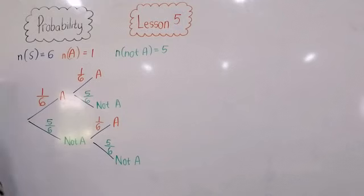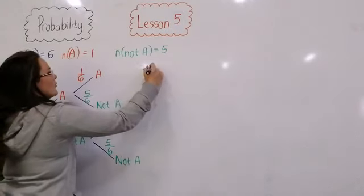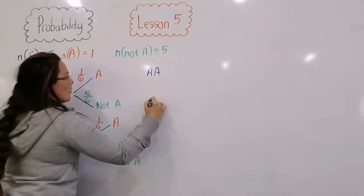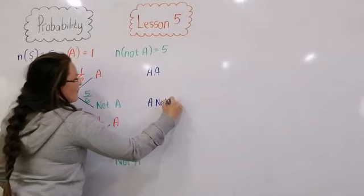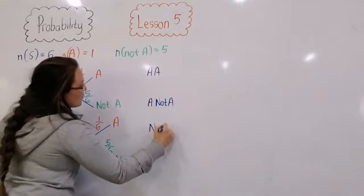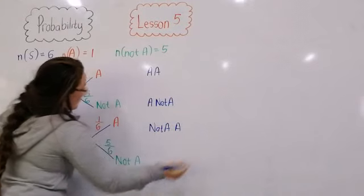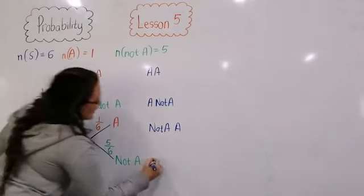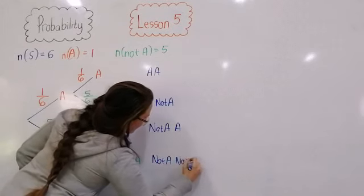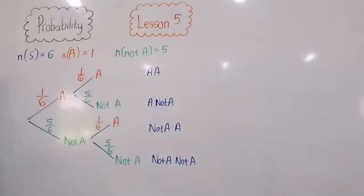Let's draw our possible outcomes. I could either get a four and a four, or I could get a four and then not a four. I could get not a four followed by a four, or on both rolls I could just get not a four.